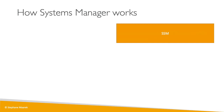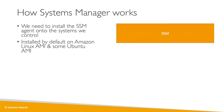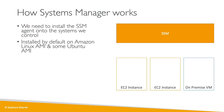It's super important to understand how Systems Manager works — this could be an exam question. SSM is an AWS service, and our instances need to have the SSM agent installed. By installing the agent, the instances report to the SSM service. This agent is installed by default on Amazon Linux AMIs and Ubuntu AMIs; otherwise you'll need to install it manually, but it's very easy — just a software install.